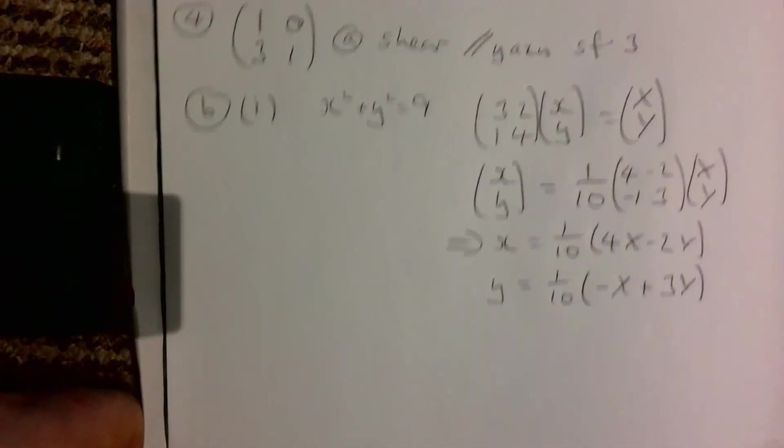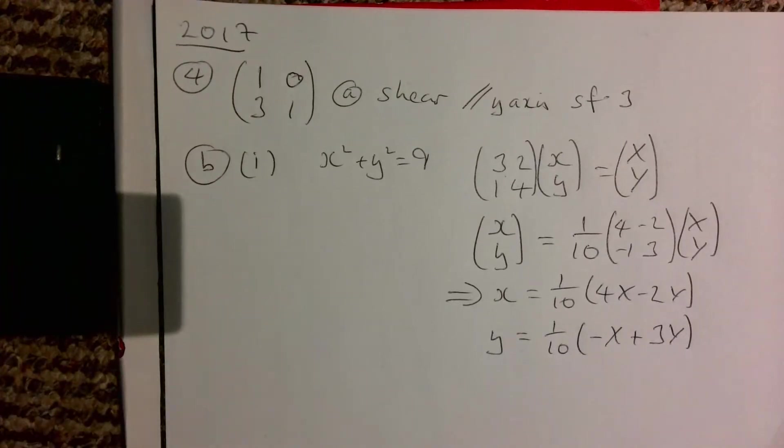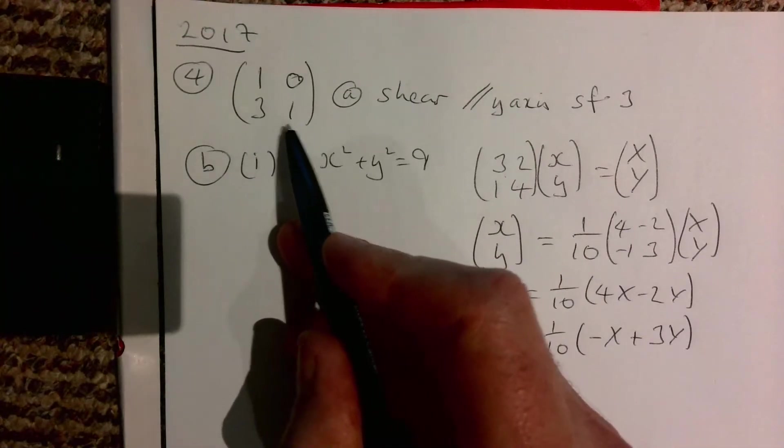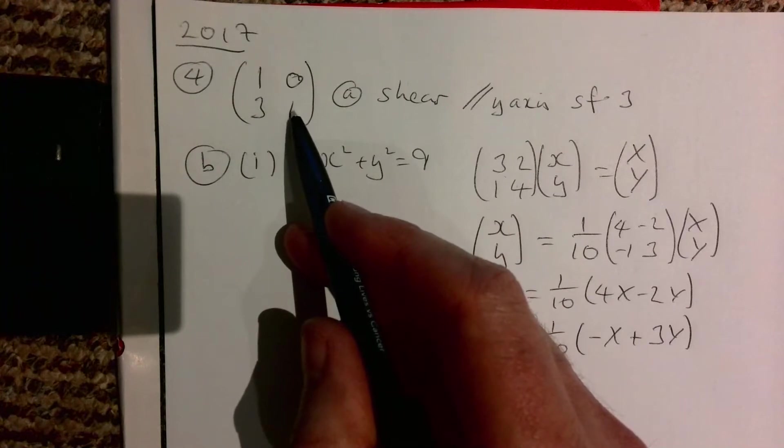Okay, so this is a matrices past paper question. It is 2017 question 4. Part 4a first of all asks describe fully the transformation represented by the matrix (1 0; 3 1).